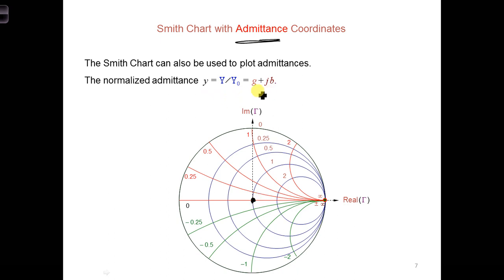So little y equals G. G is going to be the real part of the admittance, and B is going to be the imaginary part. So the real admittance values still correspond to circles, and the imaginary admittance values still correspond to arcs.